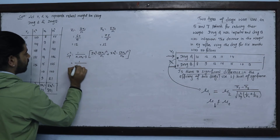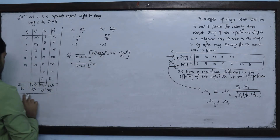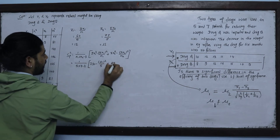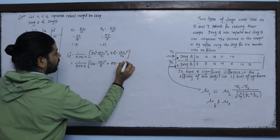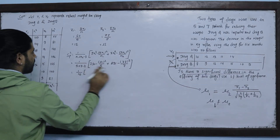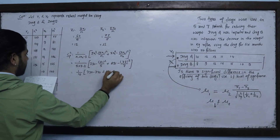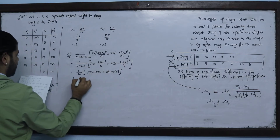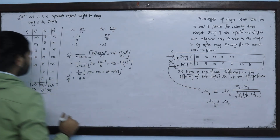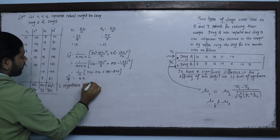The pooled standard deviation is computed as: 1 upon (n1 plus n2 minus 2), which is 1 upon (5 plus 7 minus 2) equals 1 upon 10. Then: summation x1 squared minus (summation x1) squared upon n1, which is 730 minus 60 squared upon 5 equals 730 minus 720 equals 10. Plus summation x2 squared minus (summation x2) squared upon n2, which is 891 minus 77 squared upon 7 equals 891 minus 847 equals 44. So pooled variance equals 5.4.